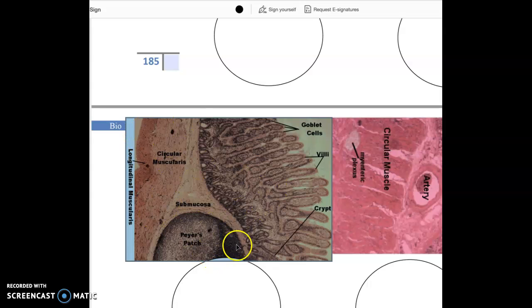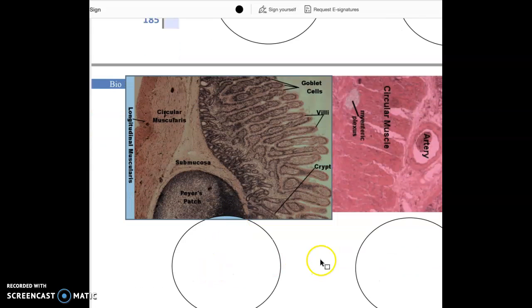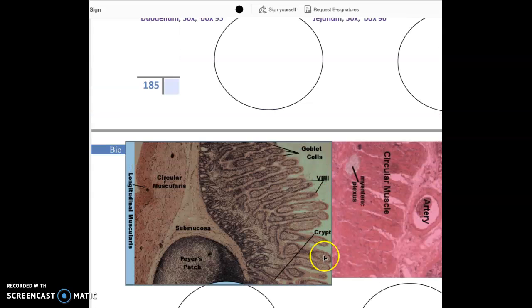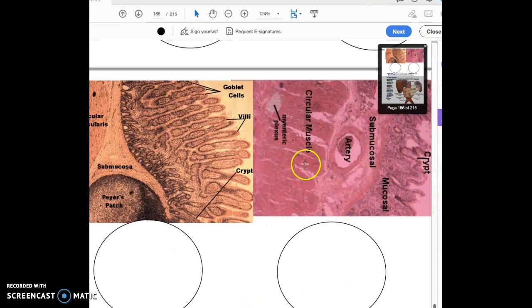So this is that other slide you did called the ileum. So it doesn't have the serosa layer on it. But that's what you're doing on that one. And I just realized, I think this is actually that large intestine slide that you're going to do that somehow kicked out the proper slide. Very interesting.